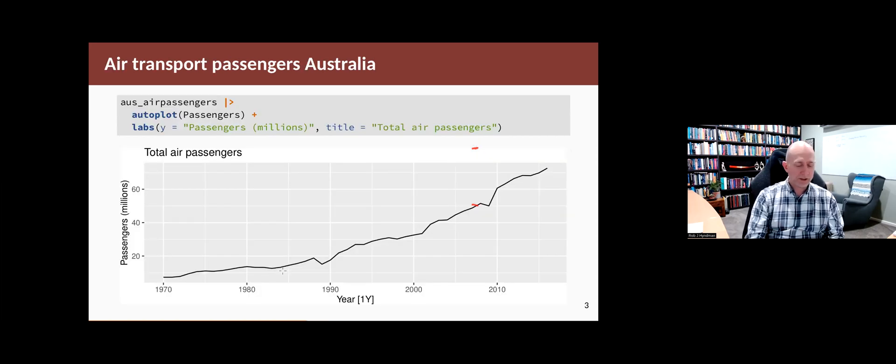Let's see what they look like when we apply them to some data. This is Australian air passenger traffic from 1970 through to a few years ago. It's annual data, so we don't have to think about seasonality here. You can see that the trend is not quite linear, but is increasing.